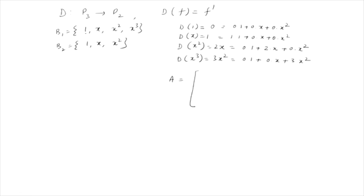The corresponding matrix has coordinates: first column [0,0,0]ᵀ, second column [1,0,0]ᵀ, third column [0,2,0]ᵀ, and fourth column [0,0,3]ᵀ. So this is the matrix corresponding to the differential map D, of order 3×4, with respect to the standard bases of P3 and P2.